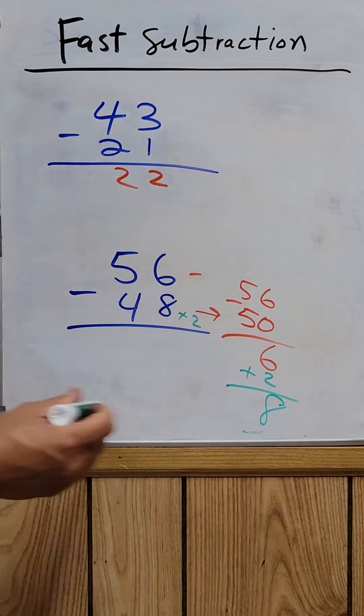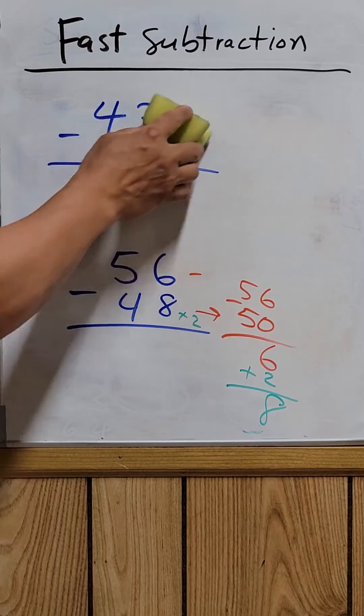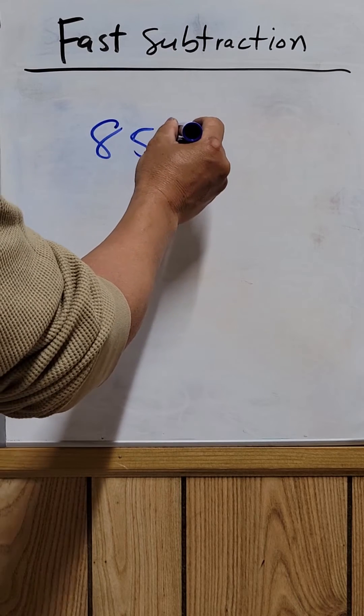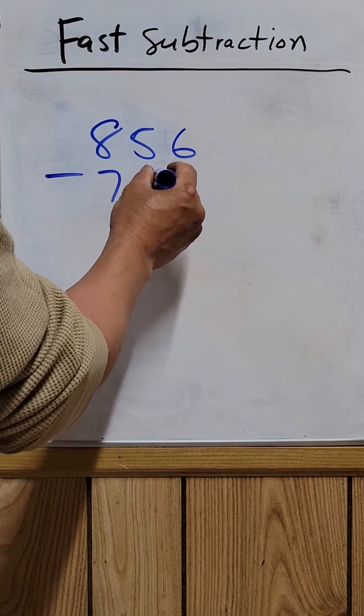So let's do another example with three digits minus three digits: 856 minus 789.